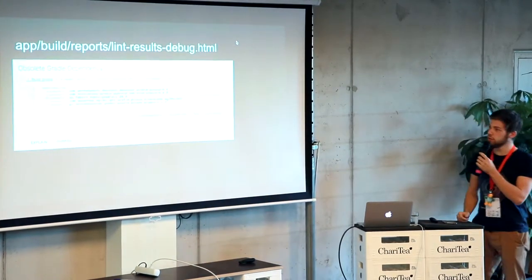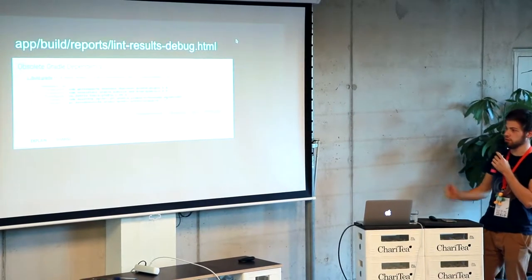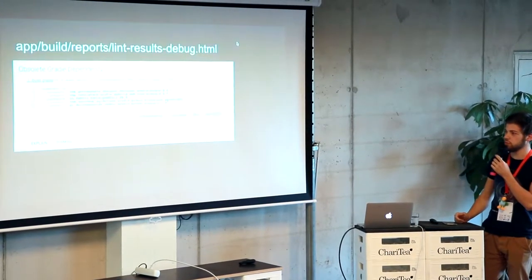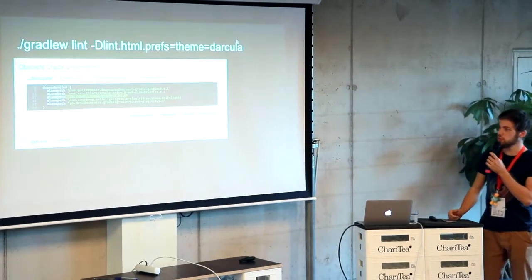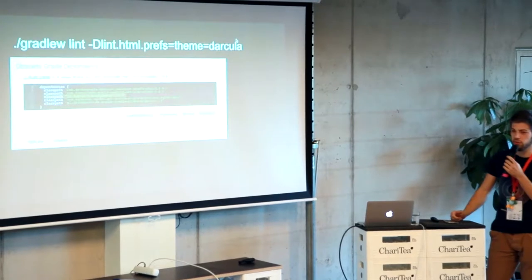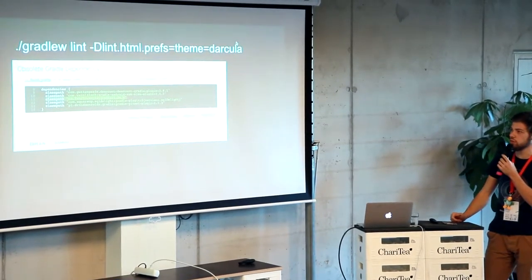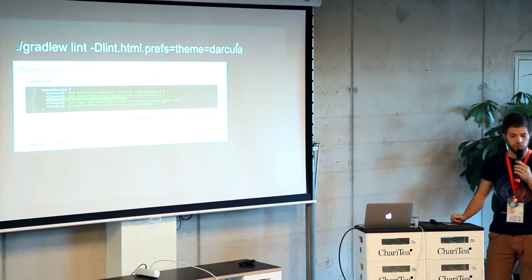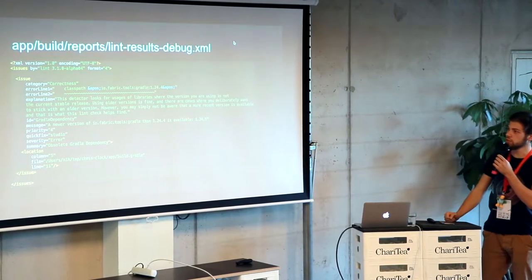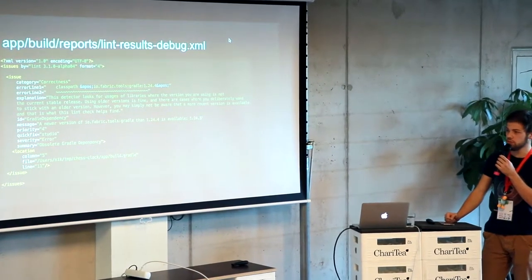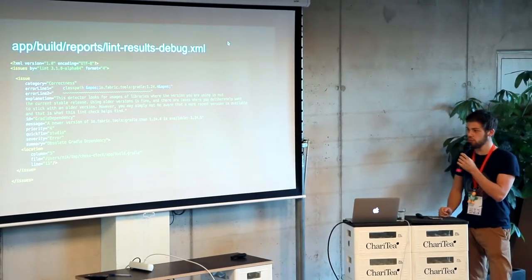If we look at the HTML report, we can see that basically the Gradle bug in for Fabric has a newer version available. There's also a little trick you can use if you want to have the dark theme in the HTML report - you basically have to pass in a custom Gradle property. If we look at the XML report that's generated, it's basically just all of the things we also see in the HTML report.